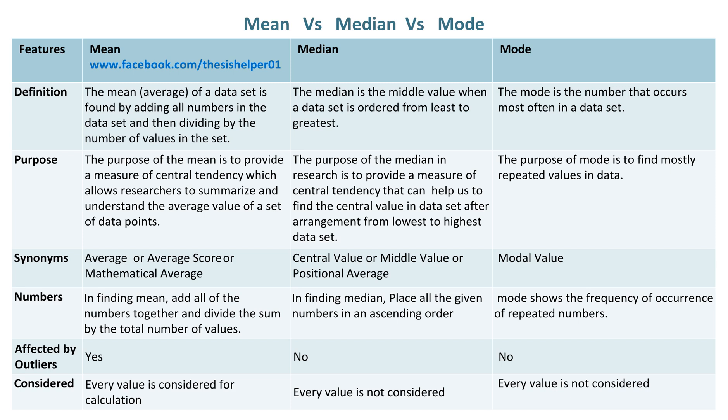Mean is affected by outliers. Yes, whereas median and mode are not affected by outliers.